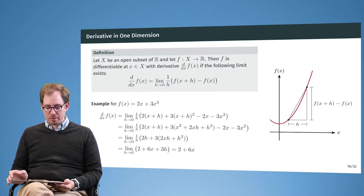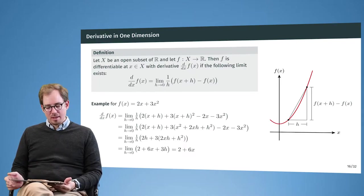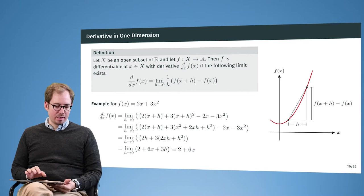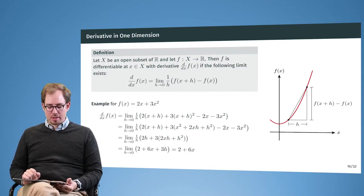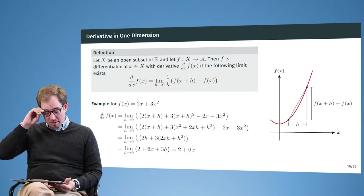And we can show this for a small example. So f of x equals 2x plus 3x squared. I will not go over this in the same detail now, but you can try to follow along and do this on your own on the slide.